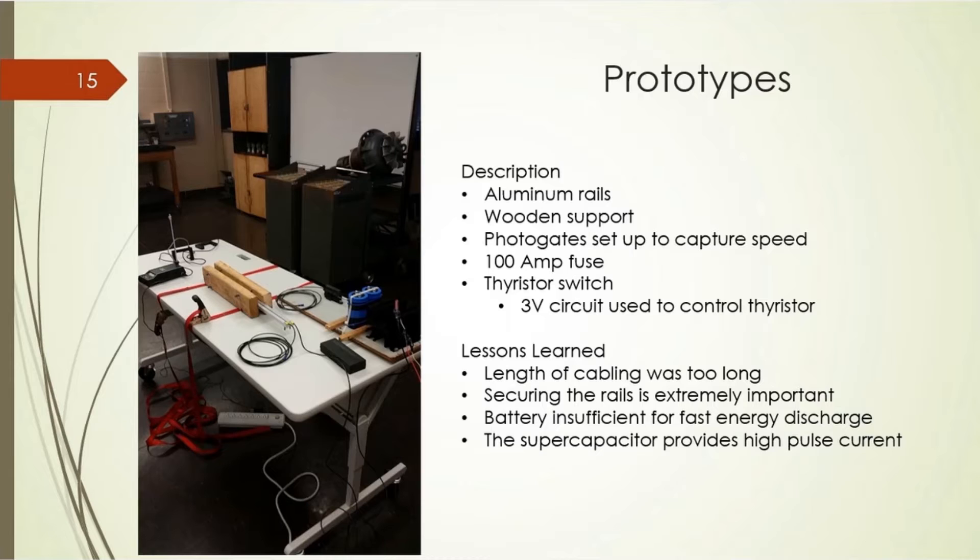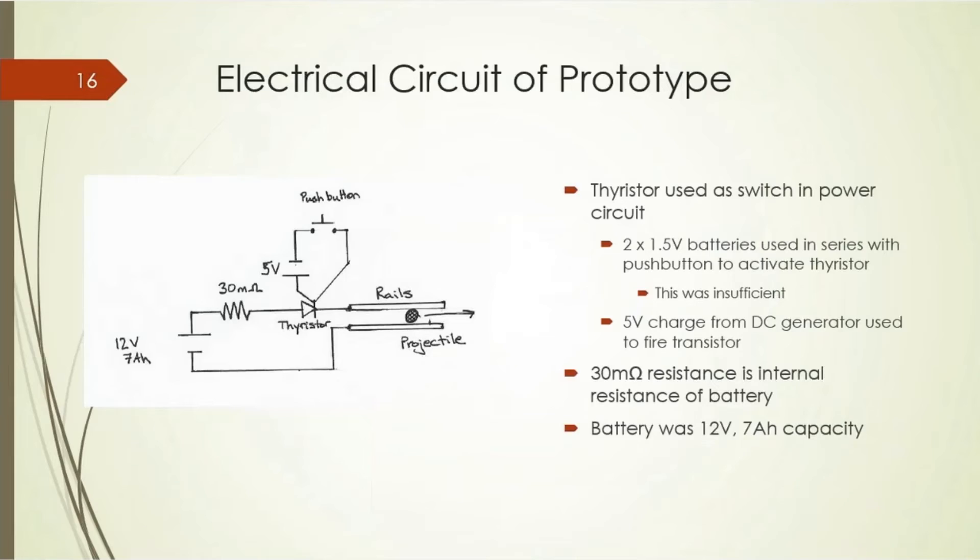The battery was insufficient for a fast discharge rate. This is a diagram of the electrical circuit for my first prototype. These are the two rails with the projectile in between here to complete the circuit. The power source is a battery with 30 microhms internal resistance. I used a thyristor in line with the positive terminal of the battery to control what I thought was the firing sequence. I used a 5-volt DC generator in line with a push button so I could stand 20 feet away in a safe location and shoot it off. As I said previously, unfortunately, it did not fire. It did weld itself, which was quite interesting to see.